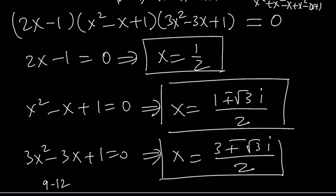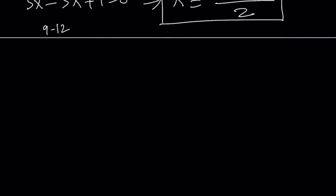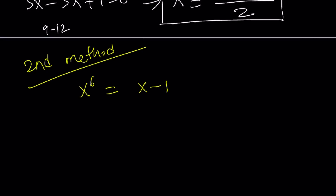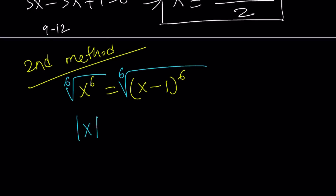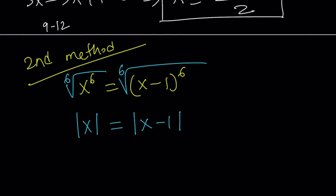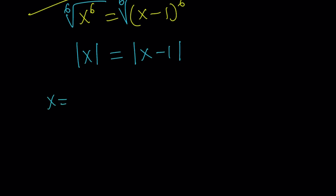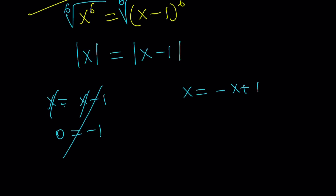Let's look at the second method. Rewriting: x to the sixth equals x minus 1 to the sixth. Taking the sixth root of both sides — since it's an even root — gives the absolute value of x equals the absolute value of x minus 1. This absolute value equation has two cases: either x equals x minus 1, which gives 0 equals negative 1 and has no solution, or x equals negative x plus 1, giving 2x equals 1, so x equals 1 half.